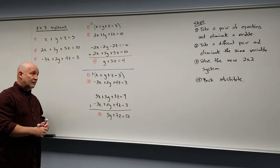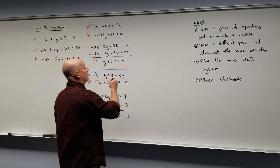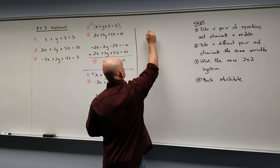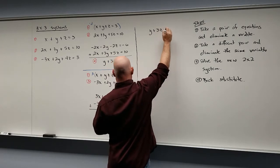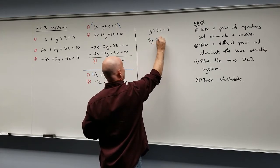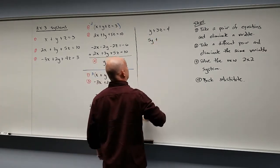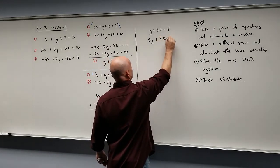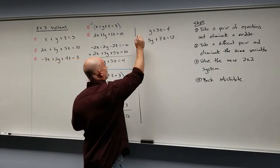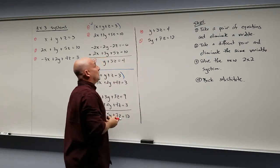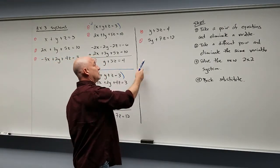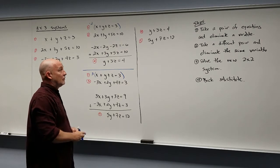That's kind of the first half of our problem. Now we think about this as a brand new problem. We now have two equations: y plus 3z equals 4 (equation 4) and 5y plus 7z equals 12 (equation 5). From here you can use either substitution or the elimination method to solve this 2 by 2 system.